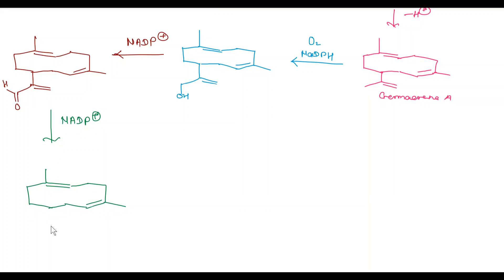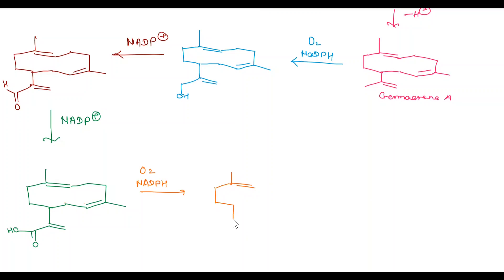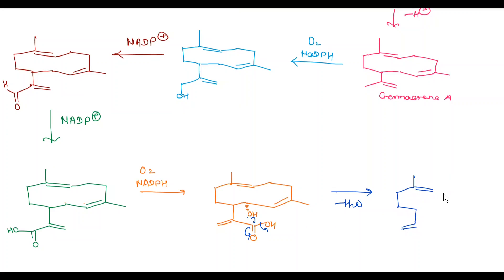In the next step, the aldehyde is converted into an acid using NADPH, and we get here a double bond, here CH3, here CH, here a double bond, CH2, and conversion of aldehyde to acid. In the next step, using O2 and NADPH, we get here OH. Then, loss of a water molecule takes place — the lone pair of oxygen attacks, and we get formation of the lactone. This is known as parthenolide precursor.